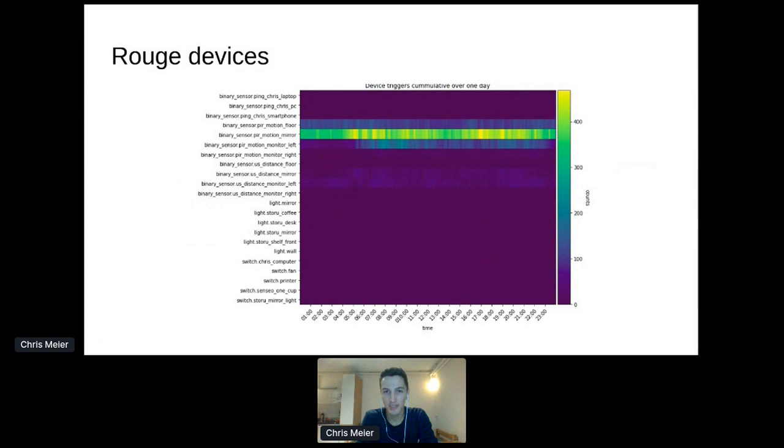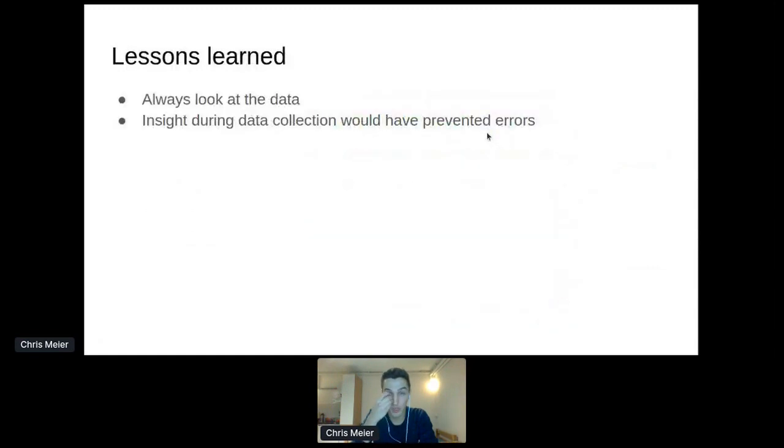Here we can see all event triggers of the devices for one day summed up over the whole period of time. What you may notice, these are all motion sensors, and this sensor in particular is just going wild and messed up the data. So what did I learn? You always have to look at the data, and this would have been good to know before tediously labeling your activities for one month.